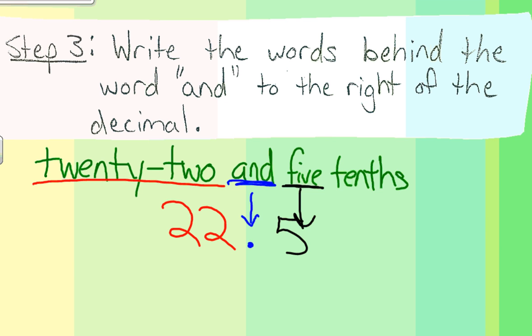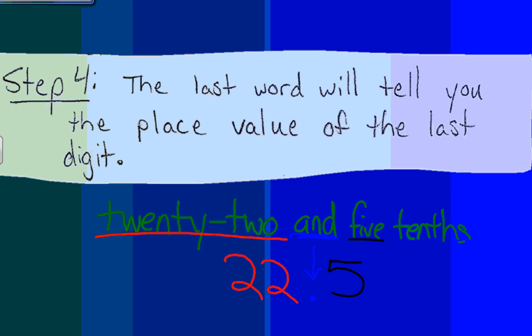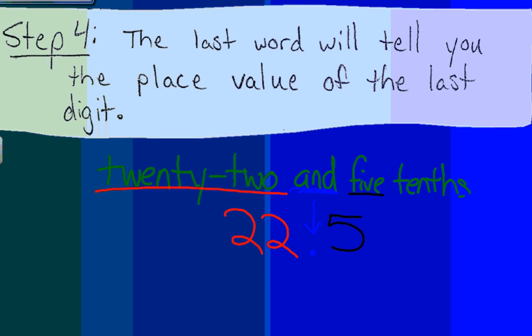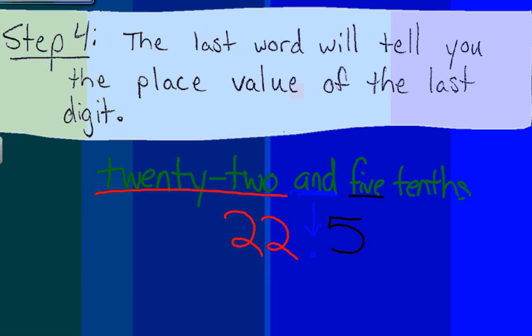Moving on. Step number four. Step number four says the last word will tell you the place value of that last digit. So when I look at my last word, tenths, I know that my place value of the last digit should be in the tenths place.